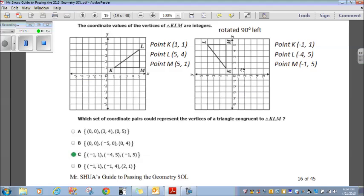point K is at negative 1, 1, point L is at negative 4, 5, point M is at negative 1, 5. Let's look at our answer choices. Choice C matches, because it said which set of coordinate pairs. So, you basically either need to rotate or dilate or flip or whatever to see what happens. In this particular case, just rotating the diagram 90 degrees left, we got our coordinates. C is our choice. Let's head on.